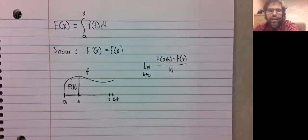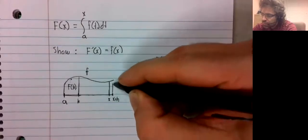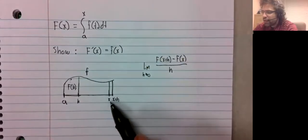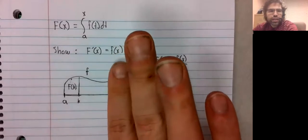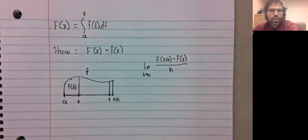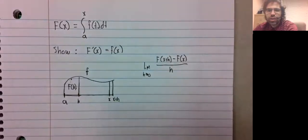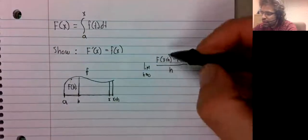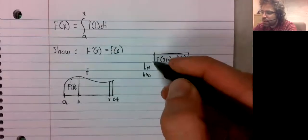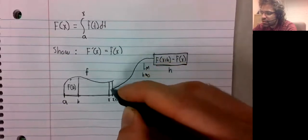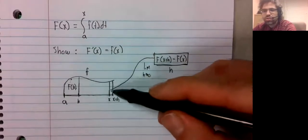Capital F of X is this area. Capital F of X plus H minus capital F of X is the area of this little sliver.